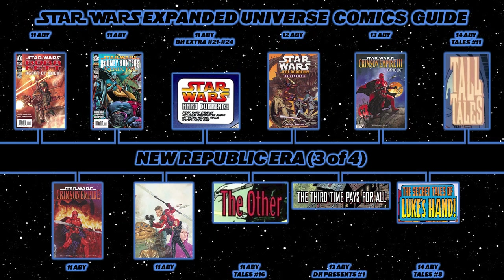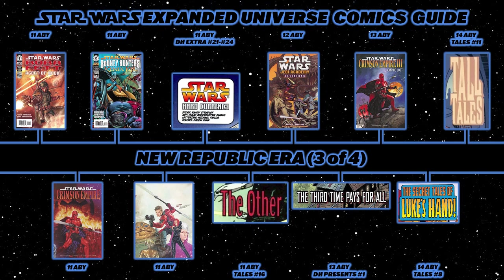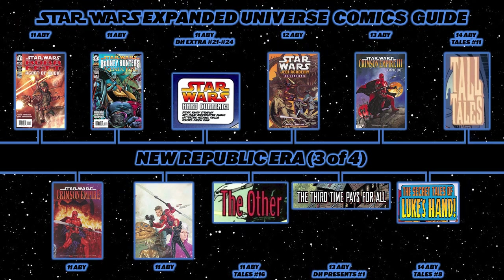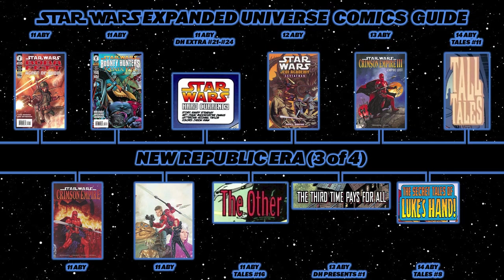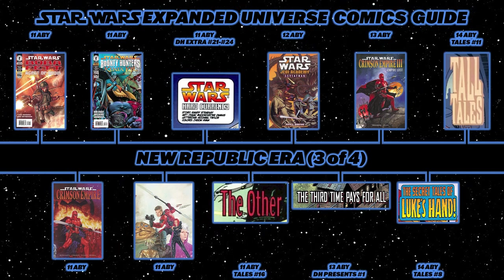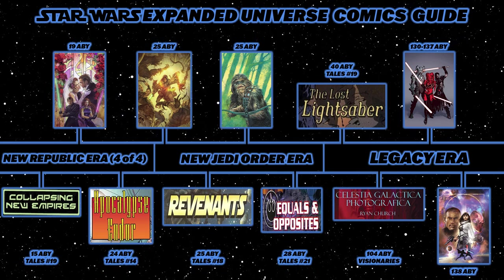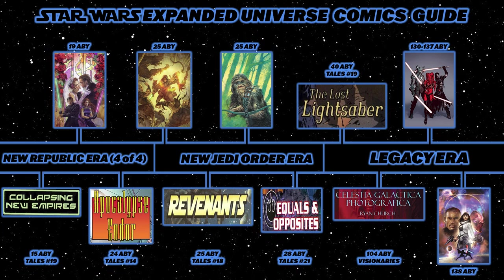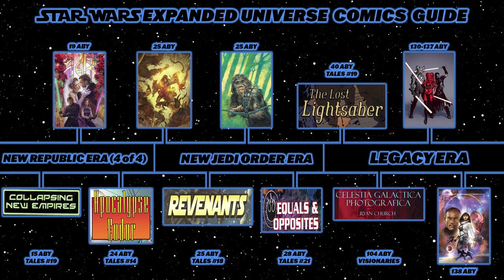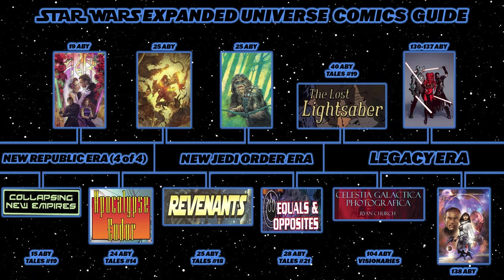Then Star Wars Tales number 16's The Other. Then the four-issue miniseries Jedi Academy: Leviathan. Then Dark Horse Presents number 1 (2011) for The Third Time Pays for All — a prequel to Crimson Empire 3: Empire Lost. Then read Crimson Empire 3: Empire Lost, released over a decade after Crimson Empire 2. Then Tales number 8's The Secret Tales of Luke's Hand, Tales number 11's Tall Tales. Then Tales number 19's Collapsing New Empires. And then the seminal Star Wars: Union, chronicling the marriage of Luke Skywalker and Mara Jade as set up in Timothy Zahn's Hand of Thrawn duology. The New Republic era concludes with Star Wars Tales number 14's Apocalypse Endor.